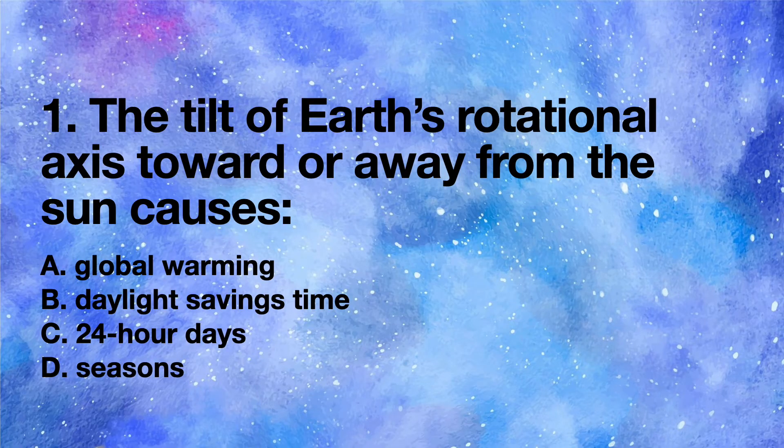The tilt of earth's rotational axis toward or away from the Sun causes: A global warming, B daylight savings time, C 24-hour days, D seasons.